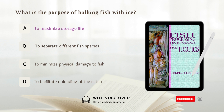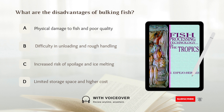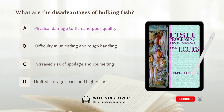The answer is A — to maximize storage life. What are the disadvantages of bulking fish? A. Physical damage to fish and poor quality. B. Difficulty in unloading and rough handling. The correct answer can be A or B. Bulking fish can cause physical damage to fish and poor quality, and can also result in difficulty in unloading and rough handling, so the answer could be A, B, or A and B.